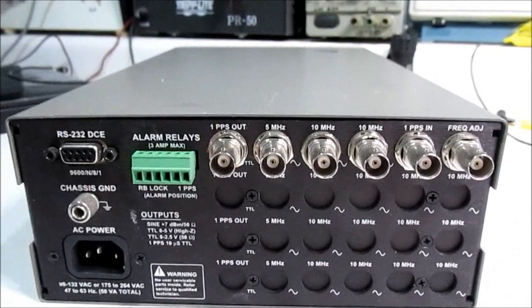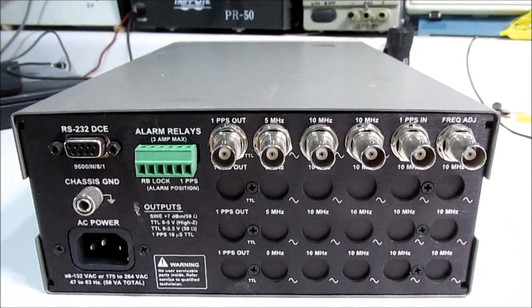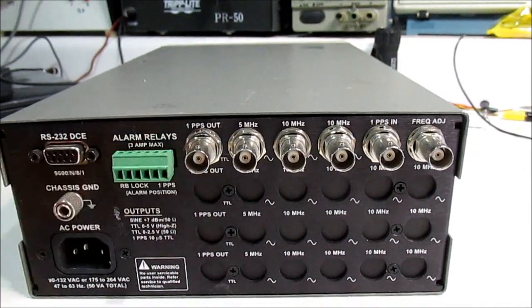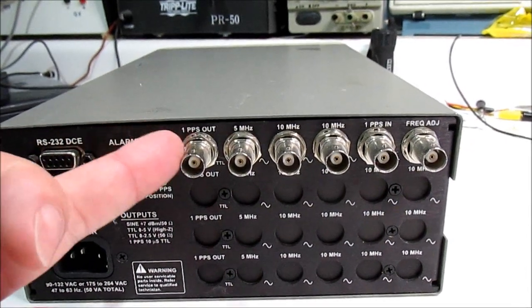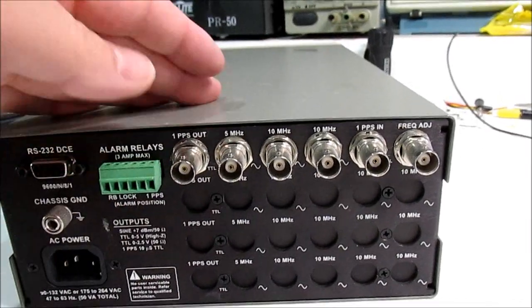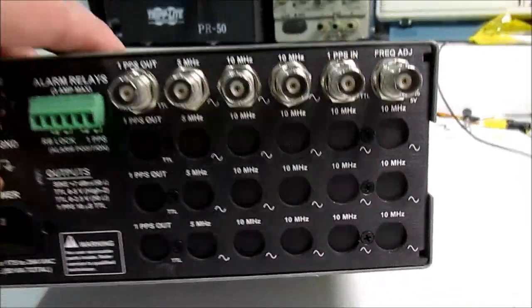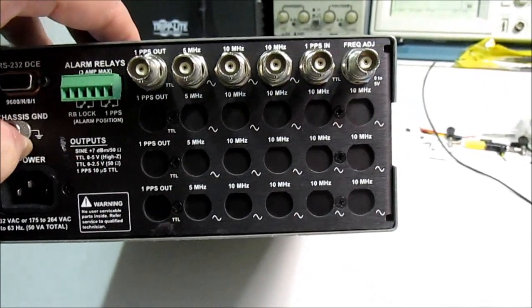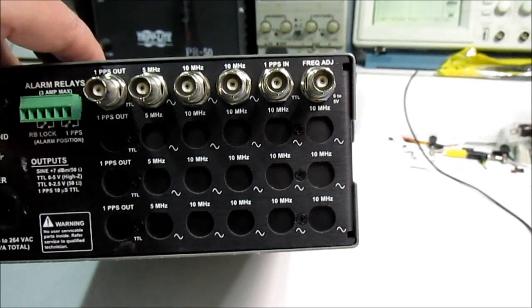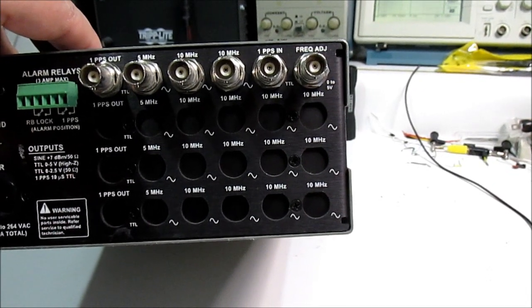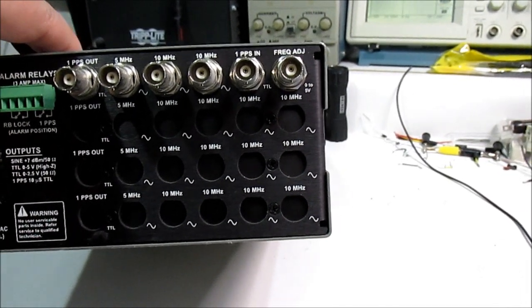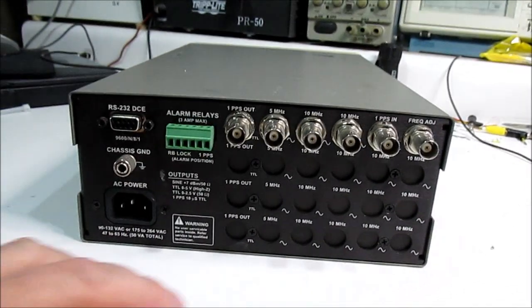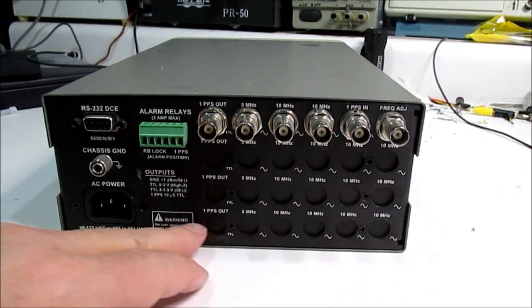So it has a bunch of jacks on the back because the front is very nondescript. We have all these BNCs here. This one says one pulse per second output TTL, then we got five megahertz sine, ten megahertz sine, another ten megahertz sine, one pulse per second input TTL, and then some kind of zero to five volt frequency adjust.